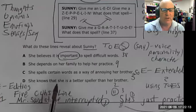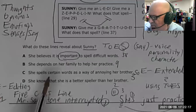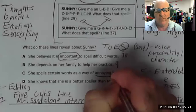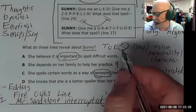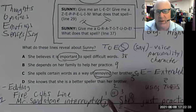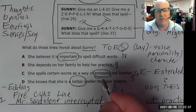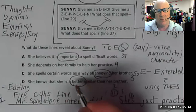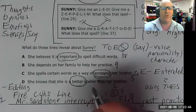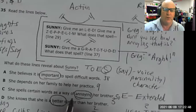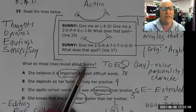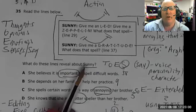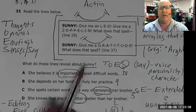The answer choices say: A - she spells certain words as a way of annoying - I'll circle 'annoying' because that's an opinion. B - she knows she is a better speller than her brother - 'better' is also an opinion. Three of these are opinion statements, so we have to figure out which of these opinions is actually true based on the content. Think of a person's character and personality as their voice - understanding characters means understanding who they are on the inside.